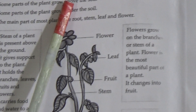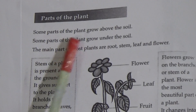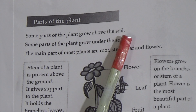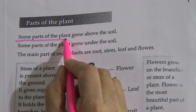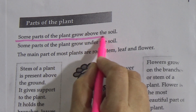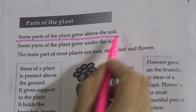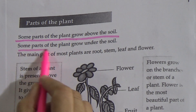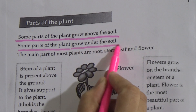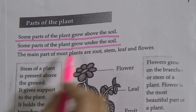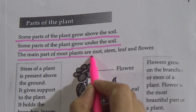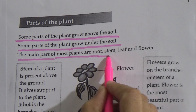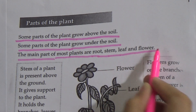Some parts of the plant grow above the soil, and some parts of the plant grow under the soil. Underline this line and remember it. The main parts of most plants are root, stem, leaf, and flower.